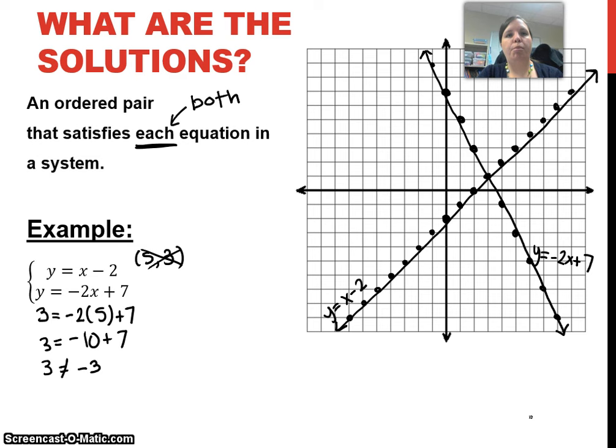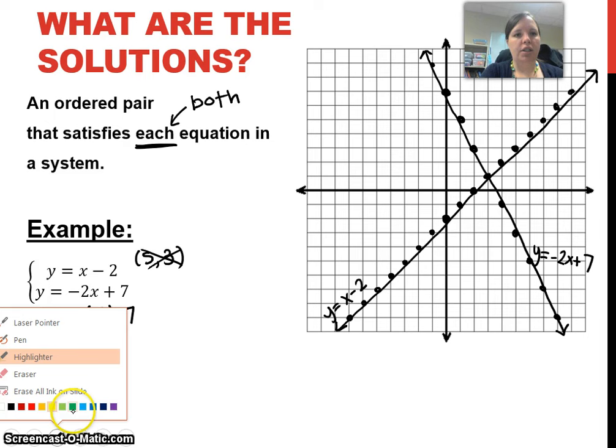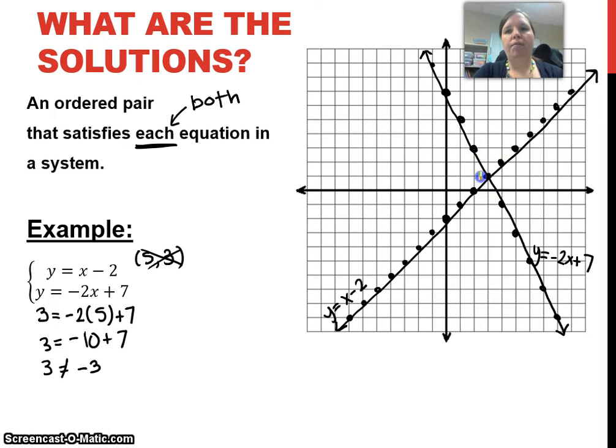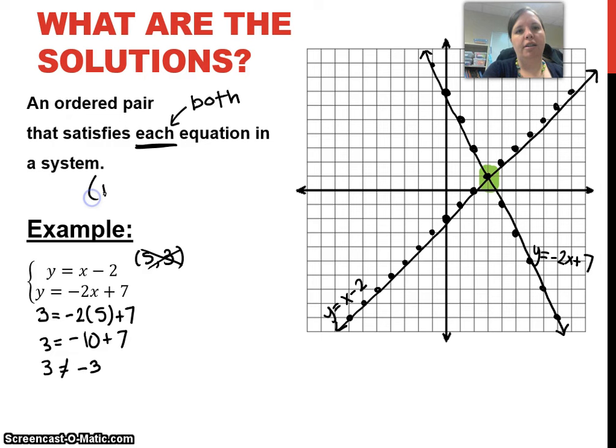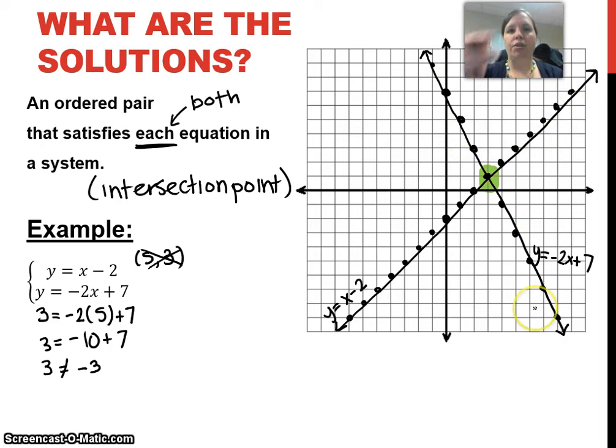So when I'm looking at the solution now, the points that satisfy both equations, what I'm really looking for is the intersection point. I'm looking for where do these two lines end up meeting. The solutions are your intersection point, because this is the point on the first line that also satisfies the solutions for the second line. So our solution is 3, 1.